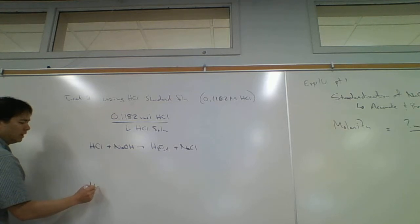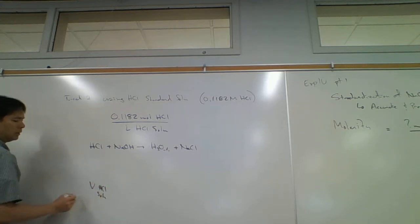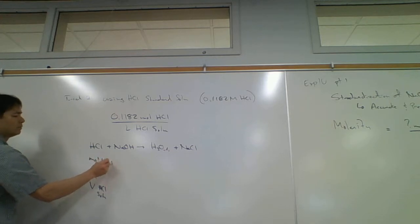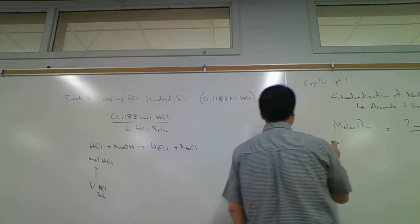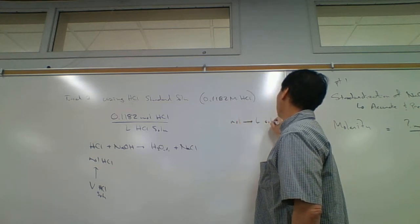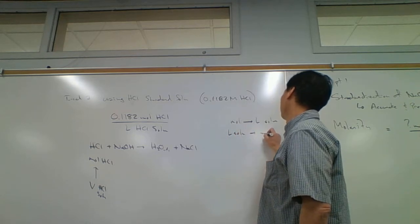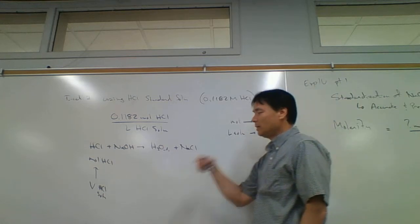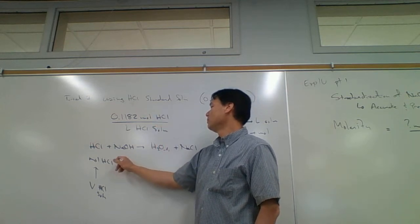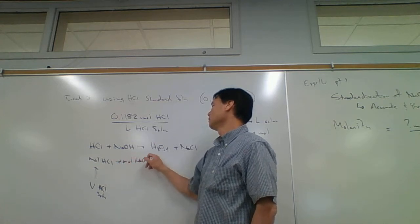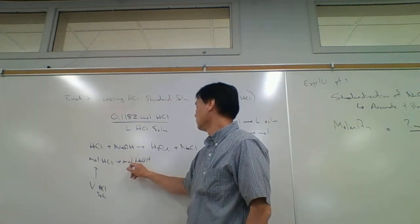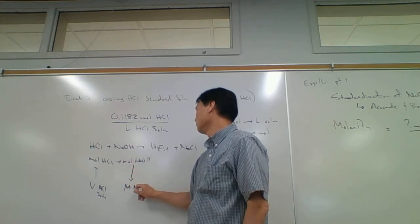For solutions, if we have the volume of HCl solution, we can go straight to moles of HCl. When we use molarity in stoichiometry, it can take us from moles to liters of solution, or from liters of solution to moles of pure substance. If we know how many liters of HCl solution we used, we can figure out moles of pure HCl, then go from moles of HCl to moles of sodium hydroxide.